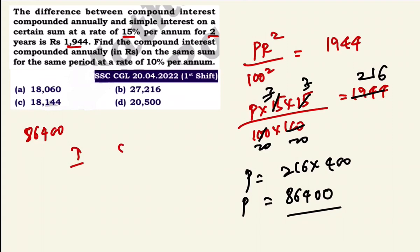First year compound interest on Rs.8,640. Second year on Rs.8,640 again — compounding at 10% per annum for two years.